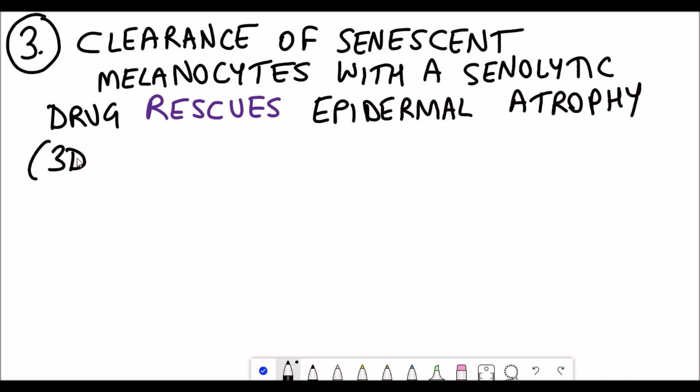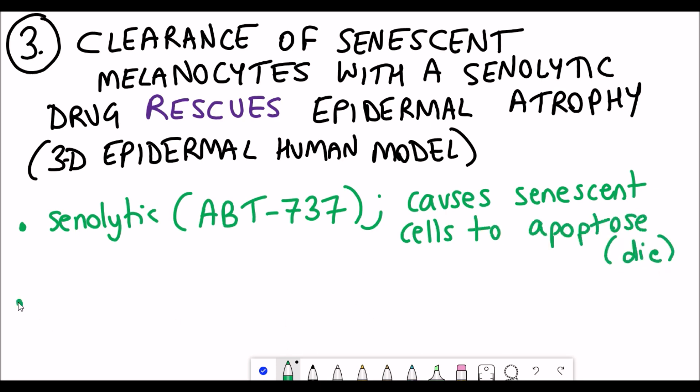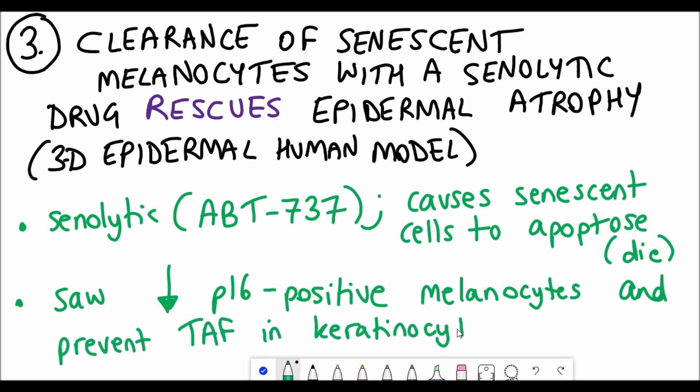They treated these models with the senolytic compound ABT-737. Senescent cells are particularly vulnerable to this compound and through this treatment the senescent cells can undergo apoptosis, which is a form of cell death. When they had effectively killed some of the senescent cells, they also saw a decline in the p16-positive melanocytes showing that the senolytic was working, but the cool thing was that they also prevented the formation of TAFs in the keratinocytes.